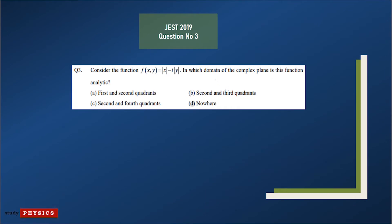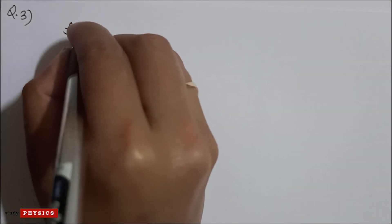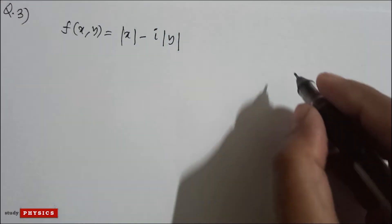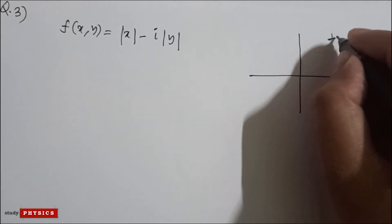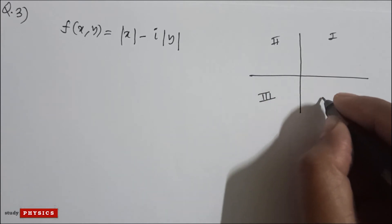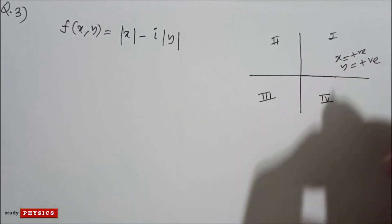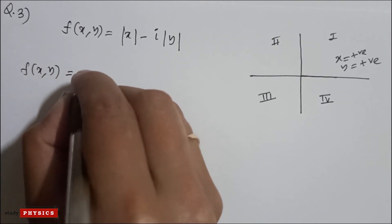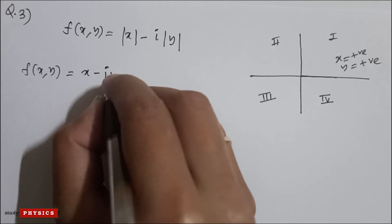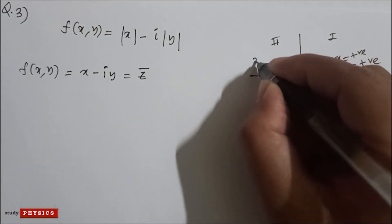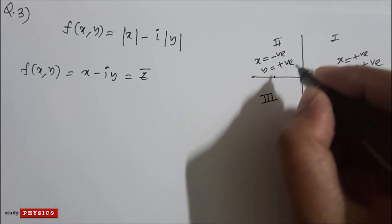Question 3: consider the function f(x, y) = |x| − i|y|. In which domain of the complex plane is the function analytic? We know there are four quadrants. In the first quadrant, x is positive and y is positive, so f(x, y) = x − iy = z.